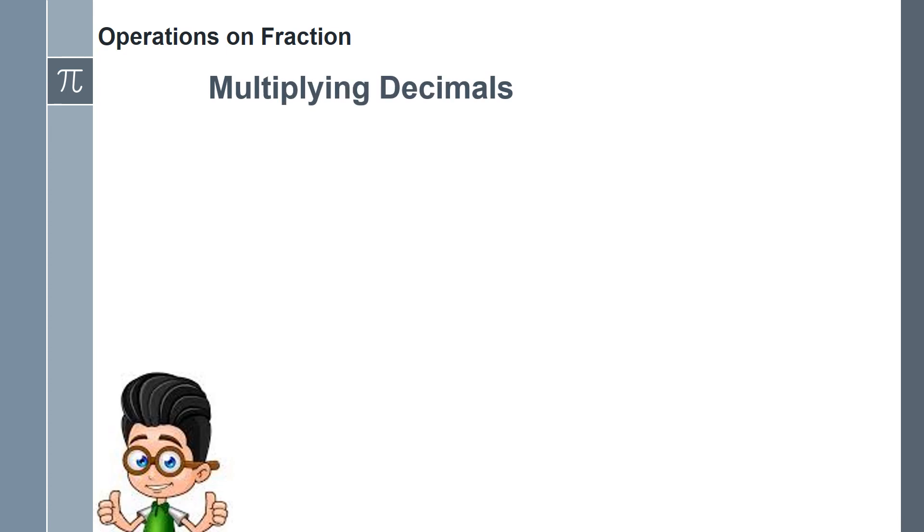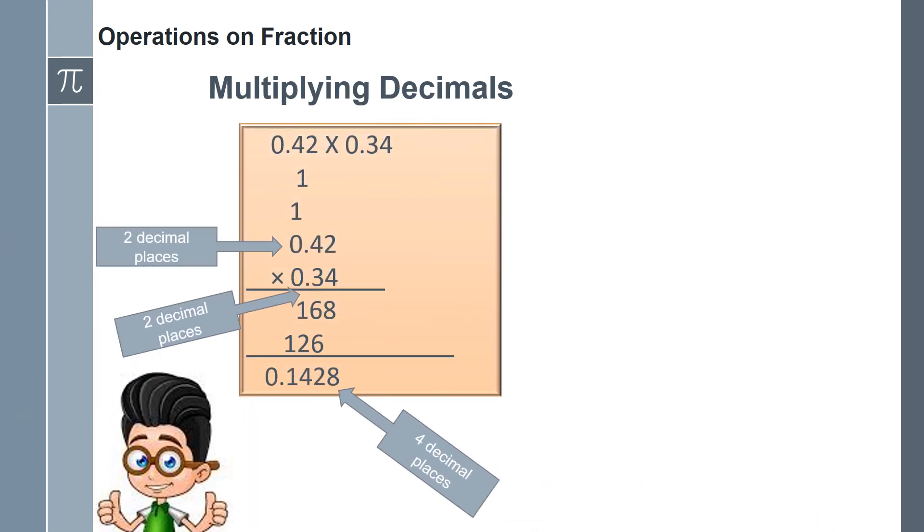Multiplication of decimals. Multiply decimals as regular integers. To determine the decimal places in the product, add the decimal places of the multiplicand and the multiplier.